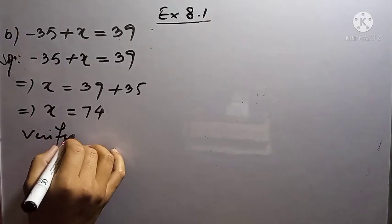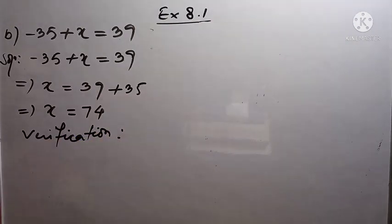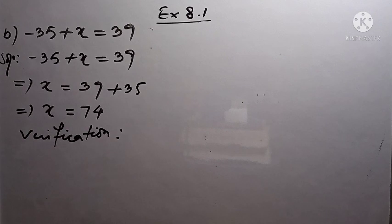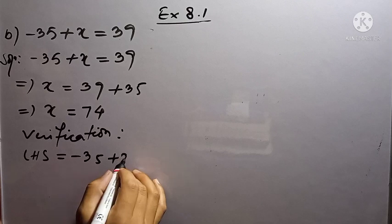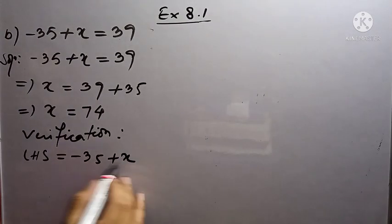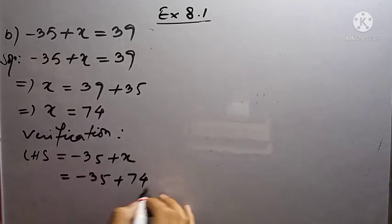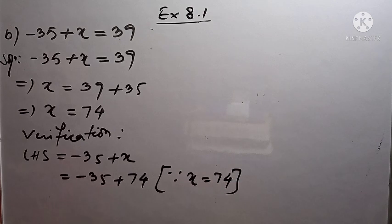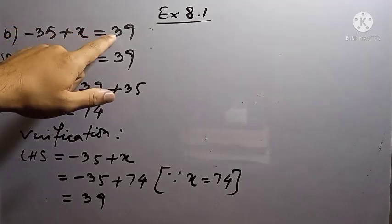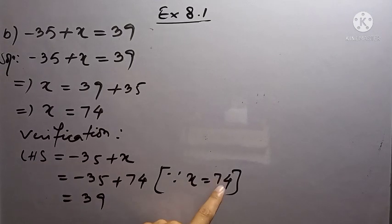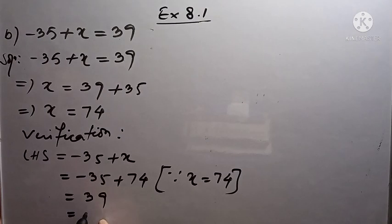Verification: On which side of the equation do you find x? I find x on the left hand side. So left hand side equals minus 35 plus x. I replace the value of x as 74. On the right hand side we have 39, and even on the left hand side, when I replace x as 74, I get 39. That means left and right are equal when x is 74. Left hand side equals right hand side, hence verified.